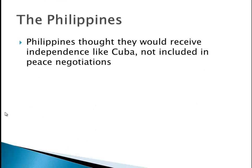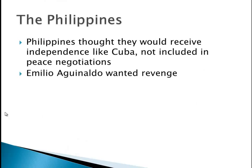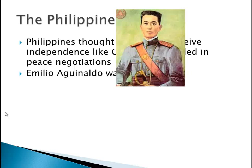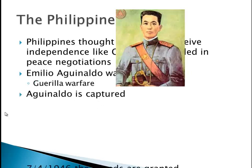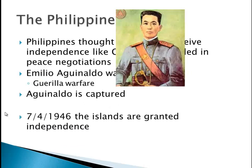The Philippines thought they would receive independence like Cuba, but they were not included in the peace negotiations whatsoever. A man named Emilio Aguinaldo wanted revenge — he and his followers engaged in guerrilla warfare. He was eventually captured. Many, many years later, on July 4th, 1946 — the same date as American independence — the Philippines were granted independence, after World War II when many countries were giving up their colonies.